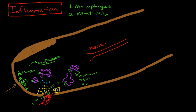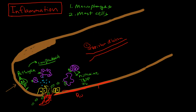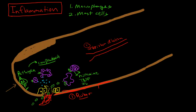This arteriolar dilation is going to cause the skin to start to look reddened in this area, causing rubor. This serves several purposes: it increases blood flow to the area so that we can increase the delivery of all the complement proteins and inflammatory proteins that we need to have there. It also increases the size of the vessel so that white blood cells can make it to the area.